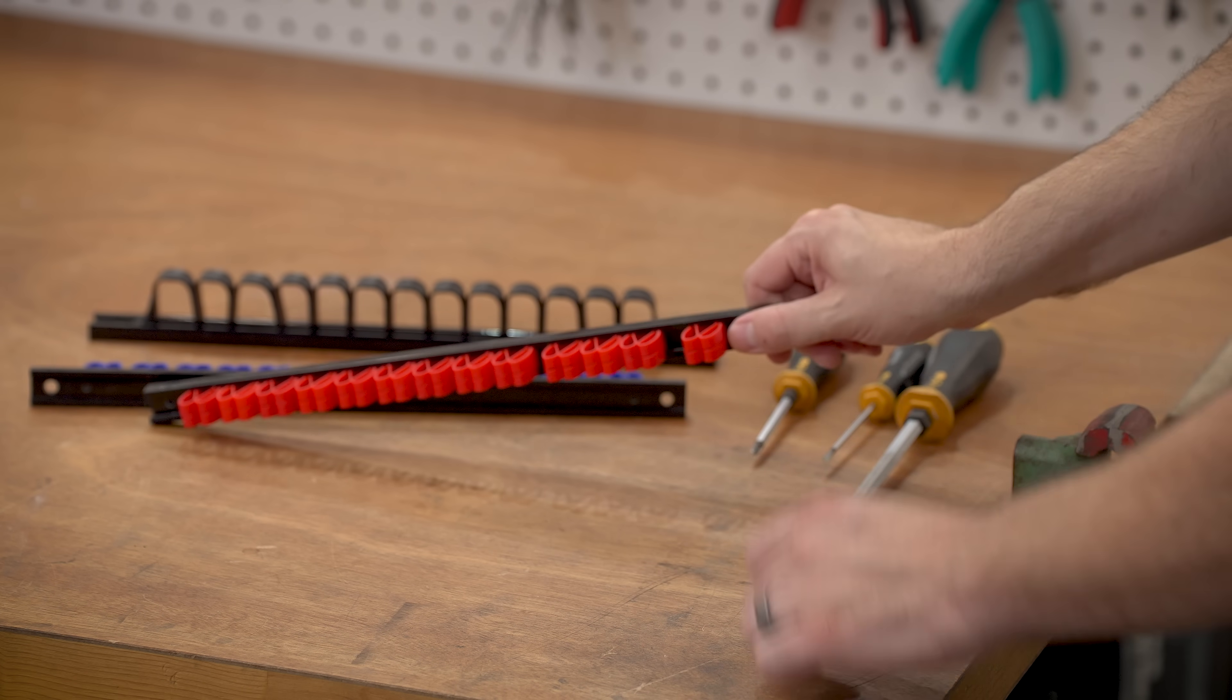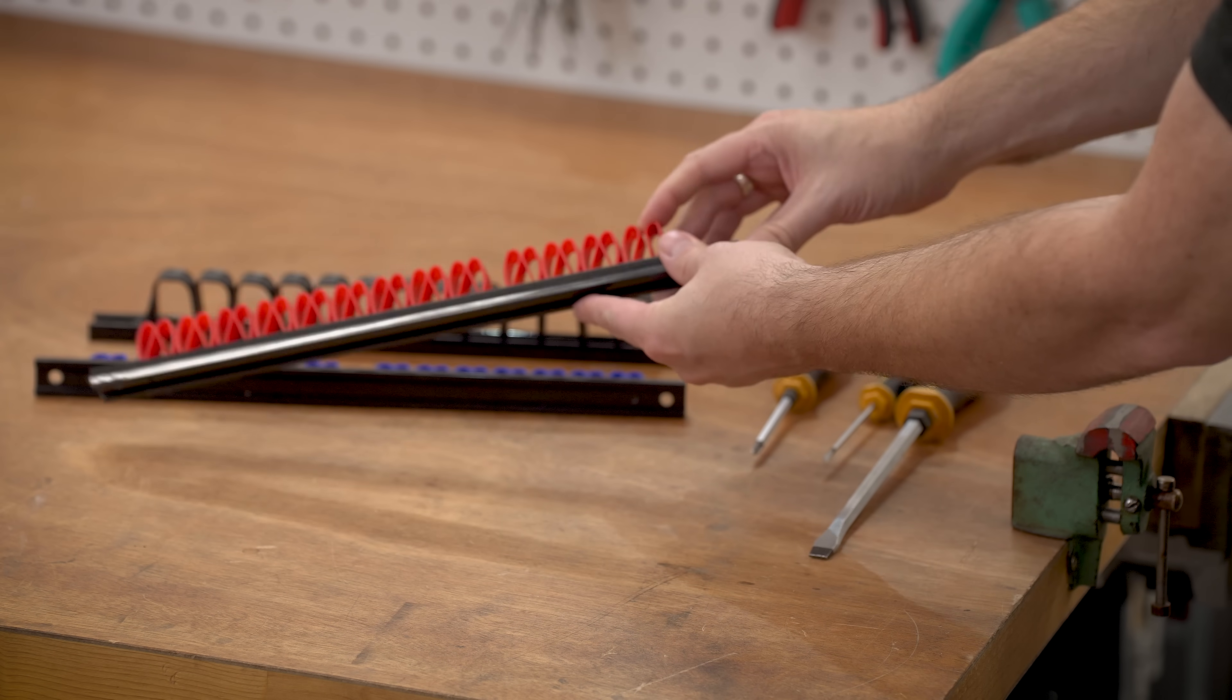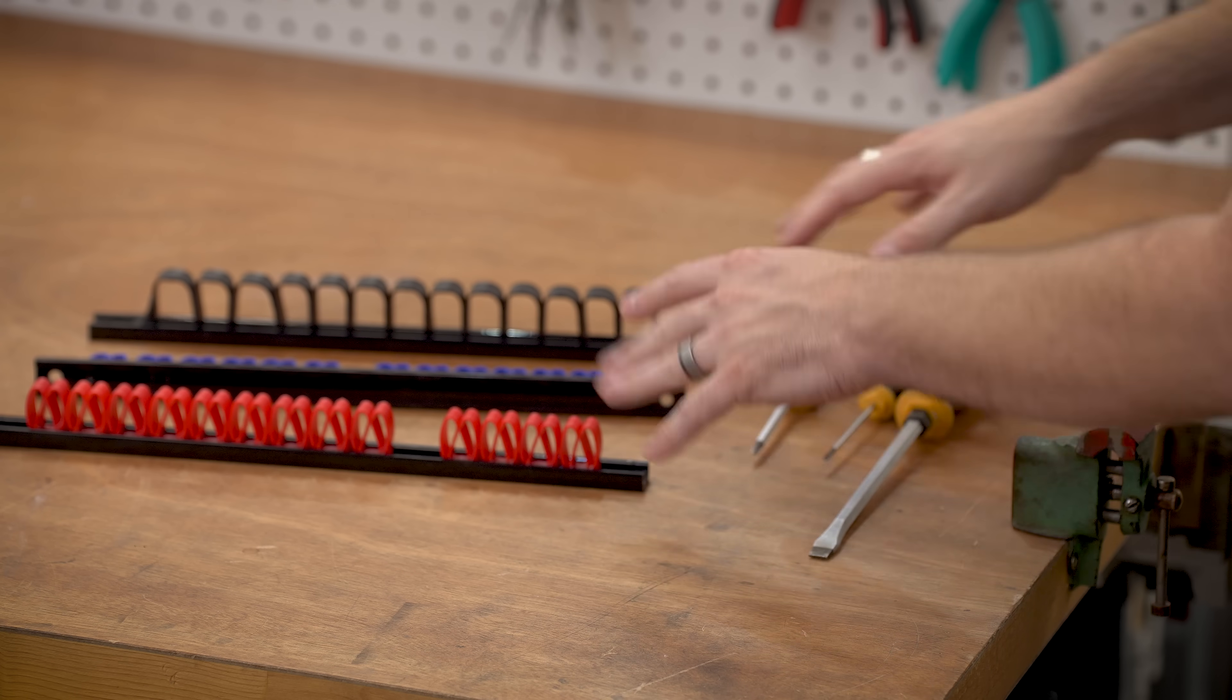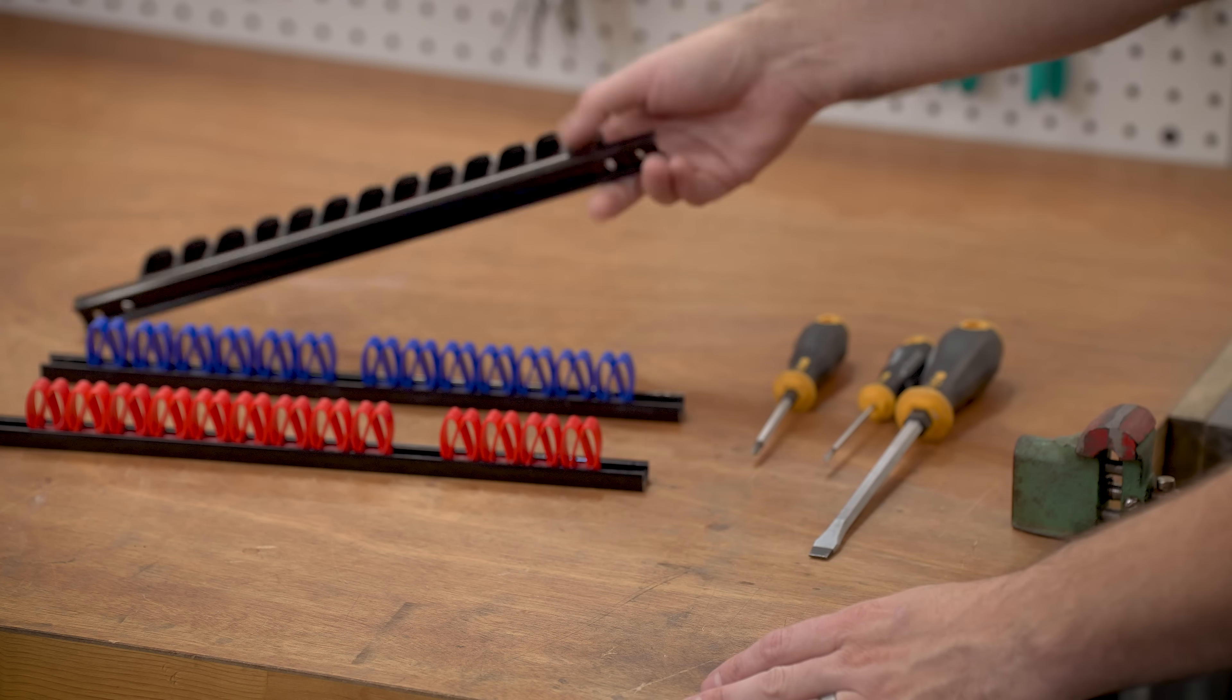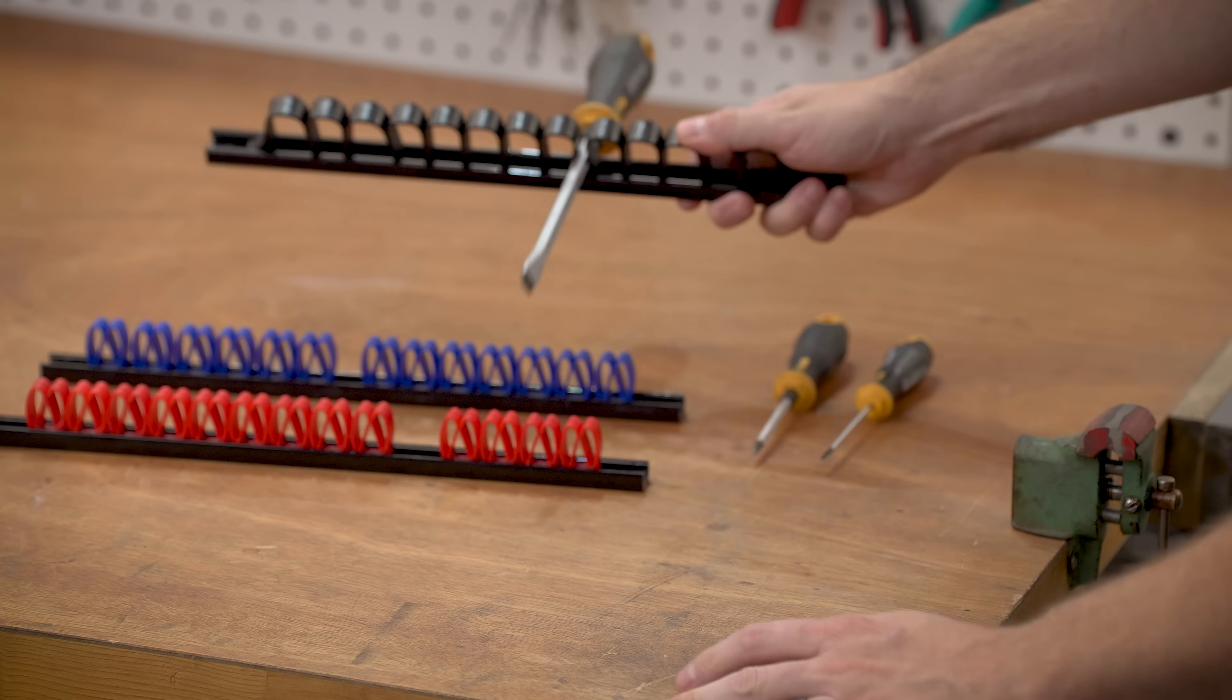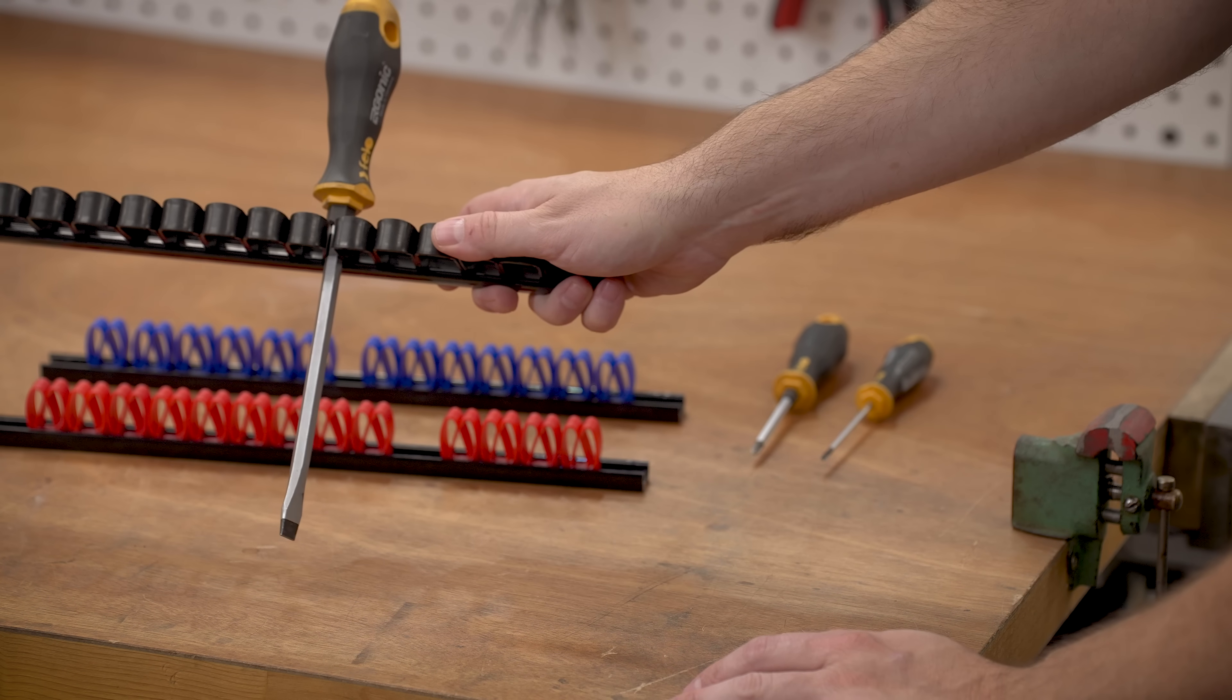So I got this set on Amazon and I thought these would maybe be a little bit better. They just kind of have these little clips that you clip into. They kind of slide along a little bit and they're awful. I don't think there's really just a good way to do this at least the way I want. The big ones work okay with larger screwdrivers. It kind of snaps in place holds it pretty decent.